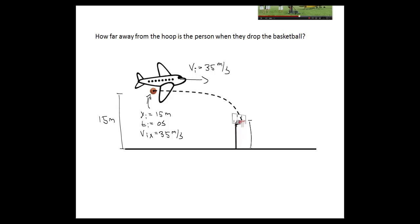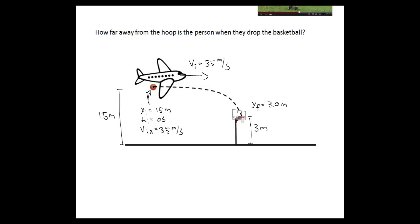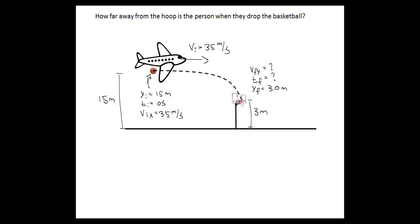We know the basketball ends up in the basketball hoop, which is 3 meters tall. So the final y position of the basketball is 3.0 meters. The final time at which it arrives there, we don't know. We don't know the final velocity in the y direction. However, we do know the initial velocity in the y direction — since the ball is just being dropped, it's actually 0 meters per second.